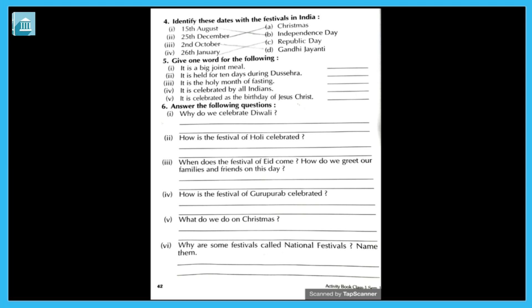Fourth one: how is the festival of Gurupurav celebrated? Answer: on Gurupurav, people go to Gurudwara to pray, and colorful processions are taken out at various places — bahut saari jagah pe log ekatha hokar julus nikalte hain, aur unke Guruon ki palki lekar nikalte hain, aur Gurudwara mein jaate hain pray karne ke liye.